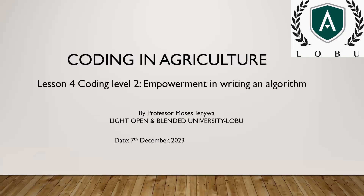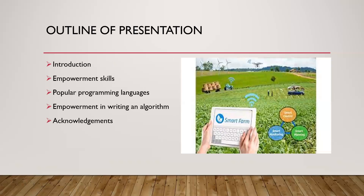Lesson four is titled Empowerment in Writing an Algorithm, and it is a build on yesterday's lesson of wisdom in coding — matching knowledge and understanding to the real-life problem. Today, we go into being empowered to be able to solve those problems using coding. The outline includes: an introduction, empowerment skills required to have the capacity to code, popular programming languages, an example of empowerment in writing a simple algorithm, and acknowledgements.